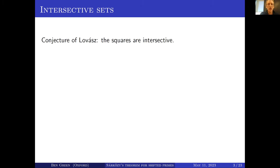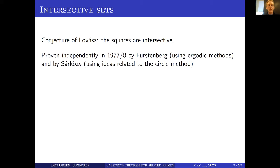So which kinds of sets are intersective? There was a conjecture of Lovász in the 70s, which is that the set of squares are intersective. That was proven in the late 70s by Furstenberg using methods of ergodic theory, in particular that correspondence principle, and also independently by Sárközy using very different ideas related to the Hardy-Littlewood circle method.